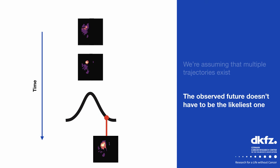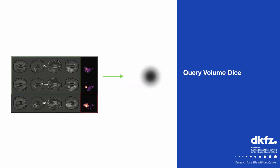The patients in our dataset receive treatment, meaning tumor shrinkage also occurs, so that on average the most likely change is almost no change at all. To evaluate whether the predicted distributions from a model are any good, we consider two measures. The first is what we call the query volume Dice.